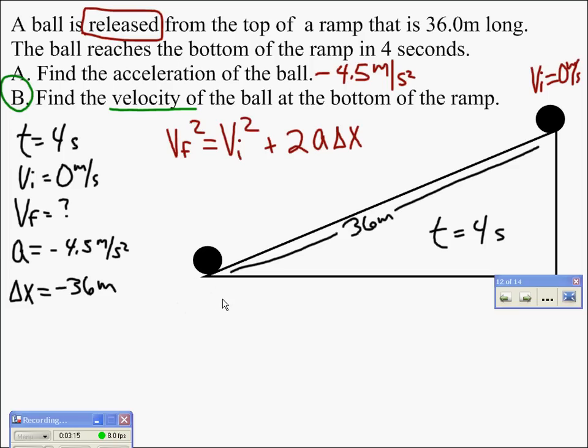So let me move this velocity here. The final velocity is what we're solving for. All right, so let's just plug in those numbers. Vf squared equals the initial velocity squared which is 0 meters per second squared plus 2 times the acceleration which is negative 4.5 meters per second squared times the displacement which is negative 36 meters.